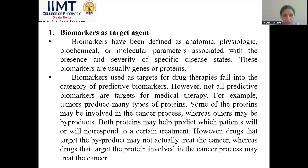Biomarkers can be used as target agents. Biomarkers have been defined as anatomic, physiologic, biochemical, or molecular parameters associated with the presence and severity of a specific disease state. These biomarkers are chains or proteins. Not all predictive biomarkers are targets — for example, tumors produce many types of proteins, some involved in a process and others being bystander proteins. Both protein types may help predict which patients will or will not respond, but drugs targeting the active protein are more effective in treating cancer.